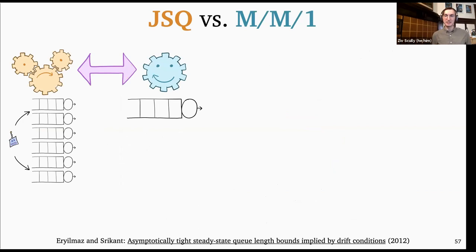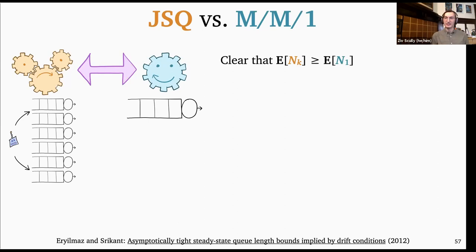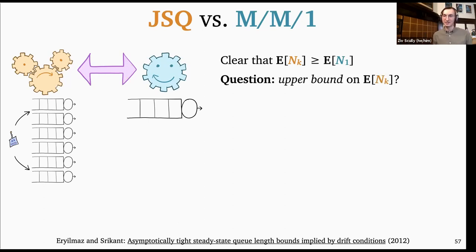I'm going to sketch a paper by Eryilmaz and Srikant, which treats a discrete-time system, so some details I'll tell you are a bit different, but the basic ideas are the same. We're comparing the JSQ system versus an MM1 system. It's pretty clear — and I'm not going to go through it in detail — that the MM1 system has not just lower in expectation but stochastically fewer jobs than the JSQ system, which you can prove using a coupling. That's the easy direction. What we really want is to use this easy MM1 system to get an upper bound on the JSQ system.